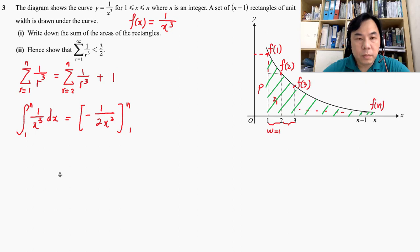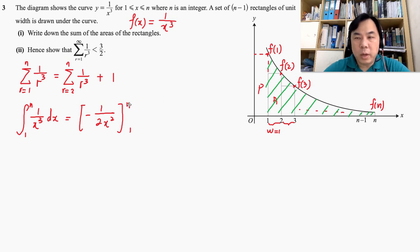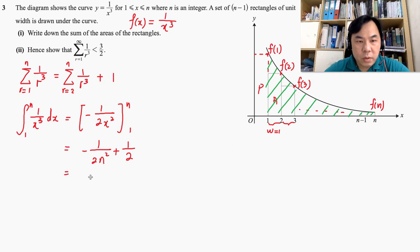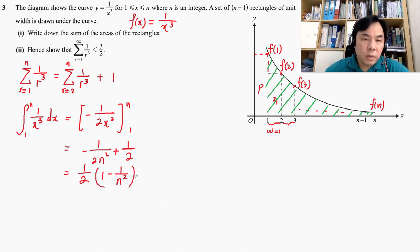Substituting x equal to n and x equal to 1, we have 1 over 2n squared subtracted from 1 over 2. Therefore, we have 1 over 2 minus 1 over 2n squared. You can factorize this; I would represent it with the 1 over n squared term clearly separated.